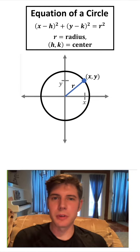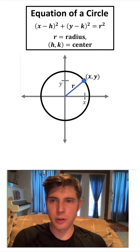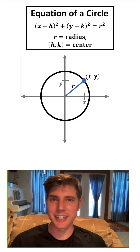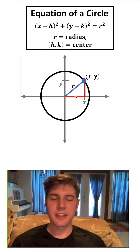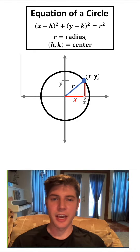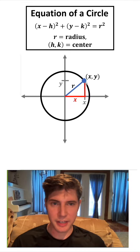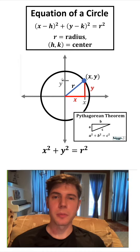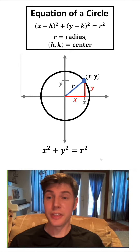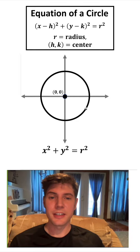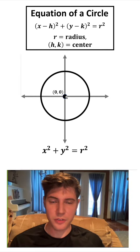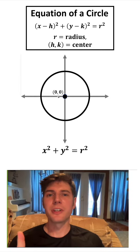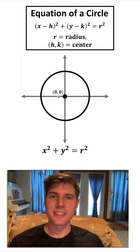Looking at our formula, we have x, y, and r in the equation. We need to find some way to connect x, y, and r. If we draw a right triangle, this side is whatever it is from 0 to x, which is just x, and this side is the height, which is just y. With the Pythagorean theorem, we can say x squared plus y squared equals r squared. This is the equation of a circle centered at the origin, where the center is at (0, 0). But our equation says the center is (h, k), so let's move our circle over to the point (h, k).